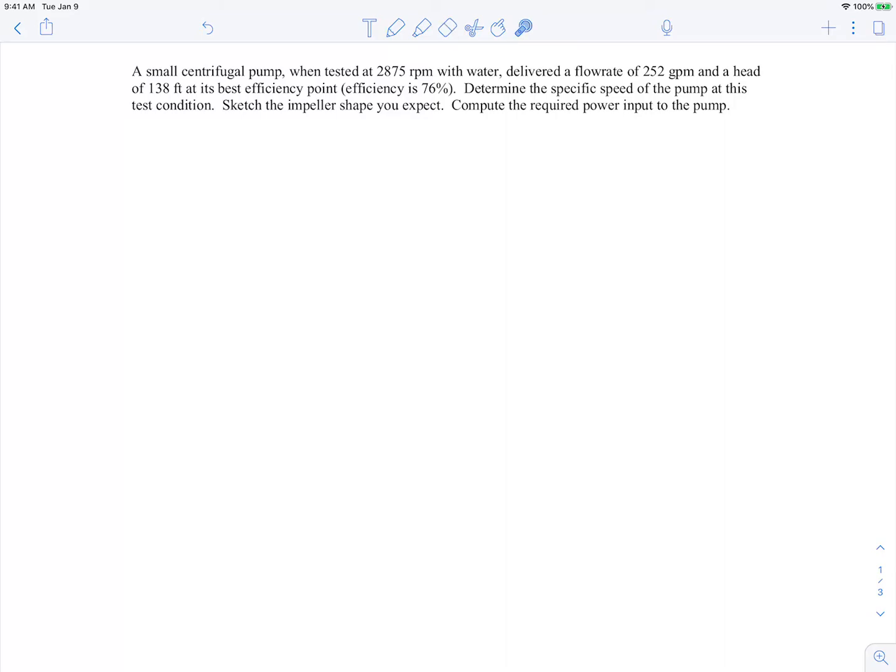In this example, we have a centrifugal pump tested at 2875 RPM delivering a flow rate of 252 gallons per minute and a head rise of 138 feet. It's being tested at its best efficiency point, which gives an efficiency of 76%. We're asked to determine the specific speed of the pump, the impeller shape, and the required power input into the pump.